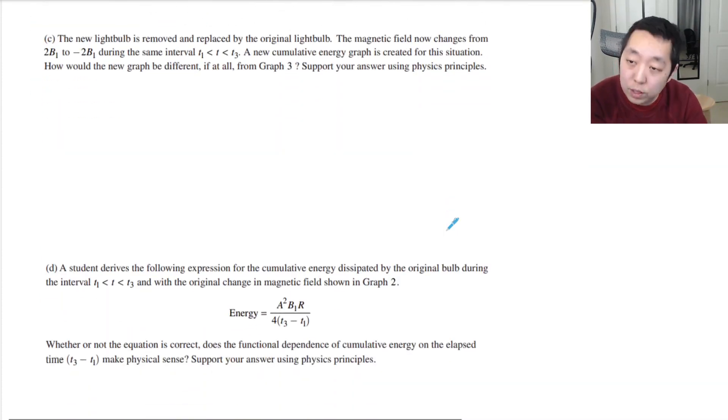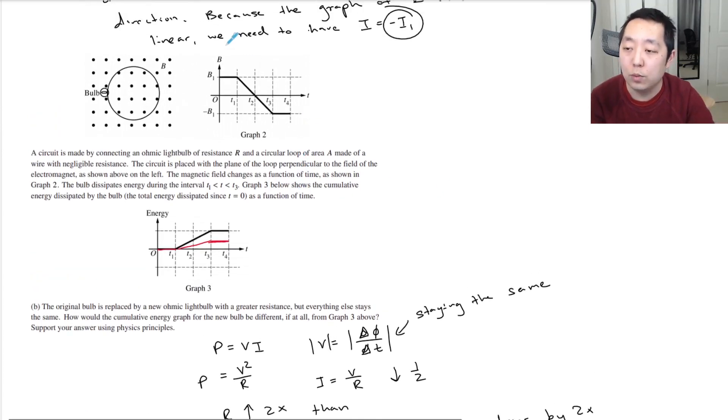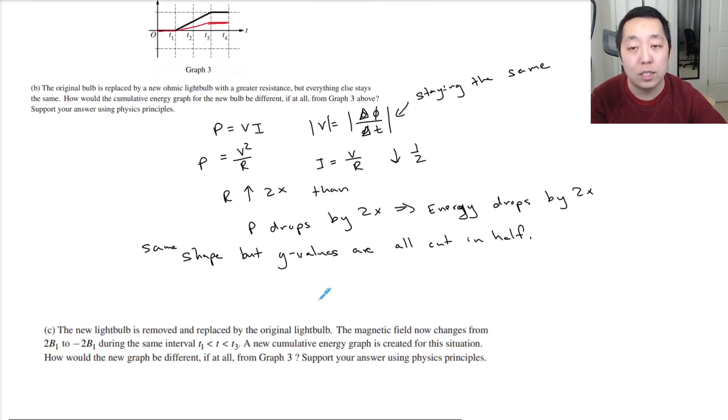The new light bulb is replaced by the original light bulb. The magnetic field now changes from 2B to negative 2B during the same time interval. Now we're going back to the original bulb but changing this part. The rate of change of the flux in the same amount of time goes from a change of 2B to a change of 4B. Twice as much magnetic field change is going to be twice as much voltage.